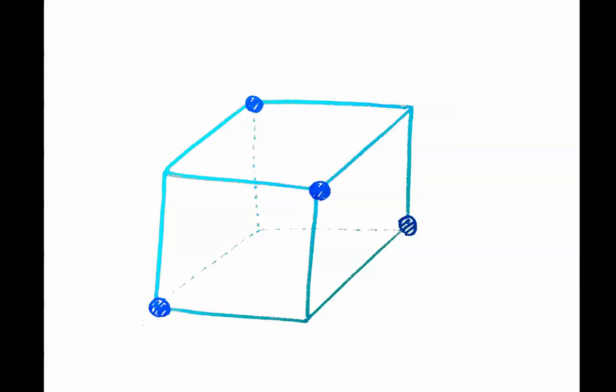there are eight atoms at the corners. Four of them, which are shown here by dark blue, are going to directly connect to the atoms inside the cube,